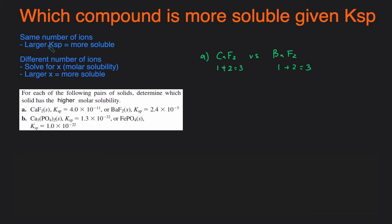So we have scenario number one where the number of ions are the same. And since the number of ions are the same, we can just take a look at the Ksp value to determine which one's more soluble. We have 4.0 times 10 to negative 11 versus 2.4 times 10 to negative 5. This is a larger number, so in this case, barium fluoride is going to be more soluble.